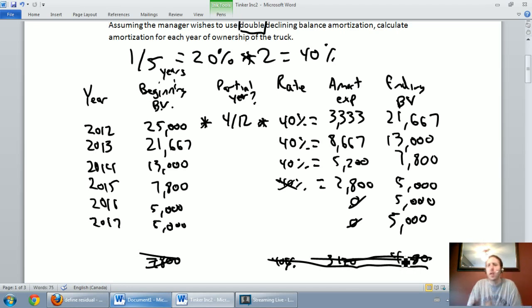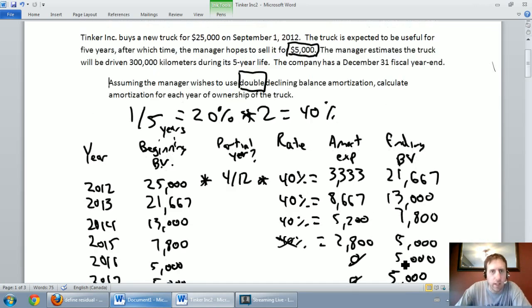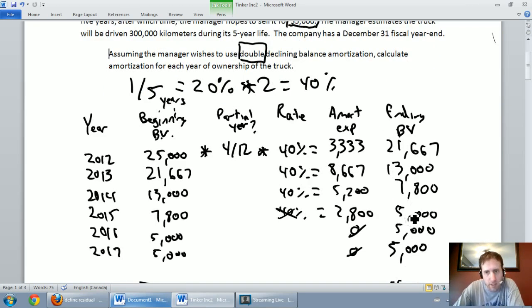Double declining balance, as you can see, is a much more aggressive amortization method. And interestingly, we don't start with our amortizable costs. We start with our book value or the cost of our asset. And we amortize based on that. Where our residual value comes in is we've got to know when to stop amortizing the asset. In this case, we stopped in 2015. That was our final year of amortization. After that, if we're still using the asset and we still think it can be traded for $5,000 or sold for $5,000, we just keep it on the books at $5,000.